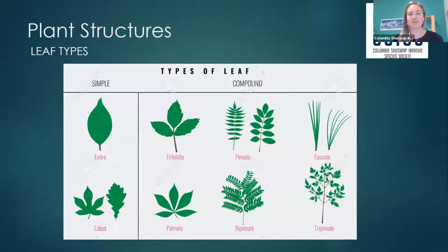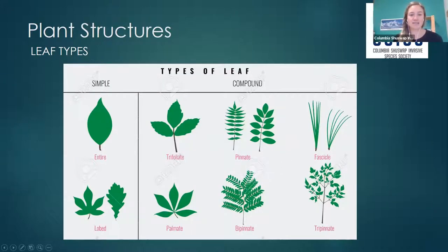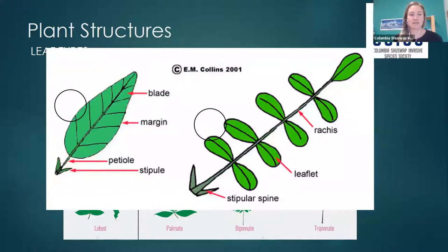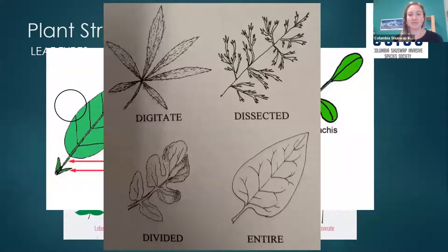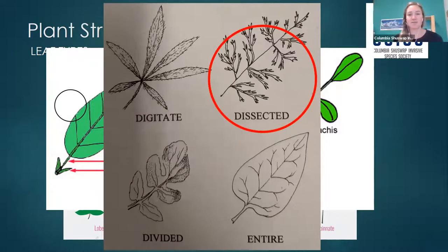Some background on leaf structure: many plants in this family have a compound leaf. A simple leaf is undivided, although the margins may be toothed or lobed. A compound leaf is divided into several leaflets. In the carrot family, the leaf is usually dissected — that means it is deeply or repeatedly cut into many portions but not divided into individual leaflets. Ferns are a classic example of this kind of leaf formation.